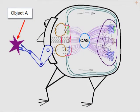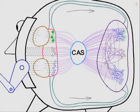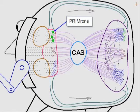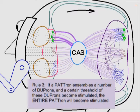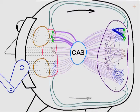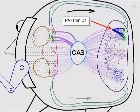To make it simple, we'll assume that A is identical to some previously encountered object, Q. As it engages object A, we see the corresponding primrons becoming active. And since the full attention of our conscious organism is being directed to it, these primrons become hyper-stimulated by the central activating system. This causes the corresponding connected downstream duprons to become stimulated. The third rule of this scheme is that if a Patron ensembles a number of duprons and a certain threshold of these duprons become stimulated, the entire Patron will become stimulated. In this case, all of the visual duprons for Patron Q1 have been stimulated by object A, and consequently, so has the entire Patron Q1.